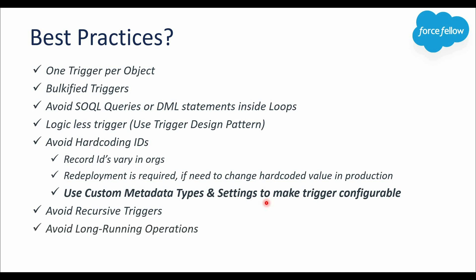Next, avoid long-running operations. Triggers always execute synchronously within the database transaction, meaning any long-running operation will delay the transaction's completion. This can increase response time for the user, cause performance issues, and potentially lead to request timeout errors, especially with large data volumes or complex operations. It's better to transfer those operations from triggers to asynchronous processes such as future methods or Batch classes, since they execute in a different thread and also provide larger governor limits.